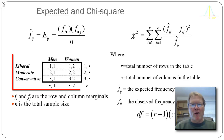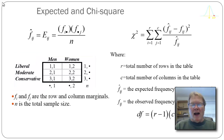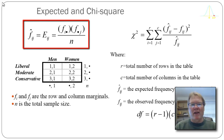In this example, I've got men and women as my independent variable separated into three groups: liberal, moderates, and conservatives. I'll have the actual values for the marginal frequencies taken from my data set and then calculate the expected values f-hat sub i j.